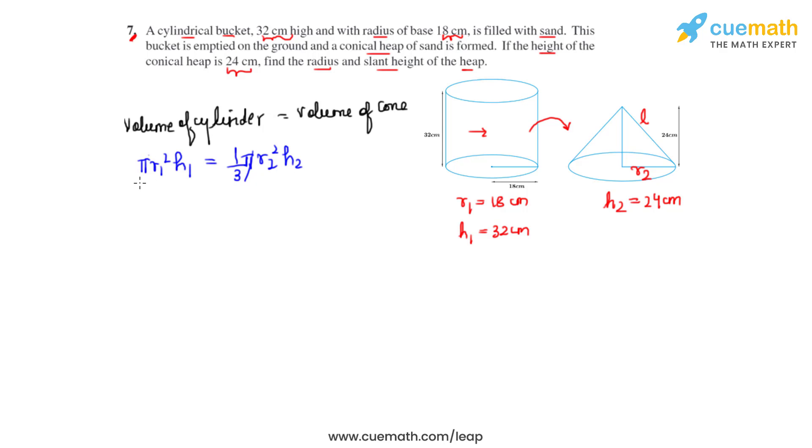π gets cancelled from both the sides. r1² is nothing but 18 times 18 and h1 is 32. That equals 1/3 times r2² times h2 which is 24.